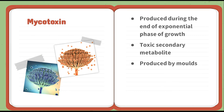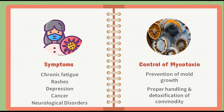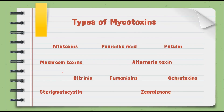Mycotoxin symptoms include chronic fatigue, rashes, depression, cancer, and neurological disorders. They can be controlled by prevention of mould growth in crops and post-harvest storage, proper handling of food commodities, and detoxification using sources like ammonia. Types of mycotoxins include aflatoxins, patulin, penicillic acid, alternaria toxin, mushroom toxin, citrinin, fumonisins, ochratoxins, zearalenone, and sterigmatocystin.